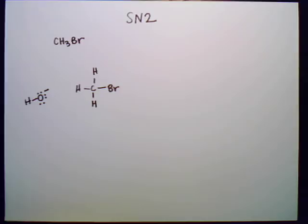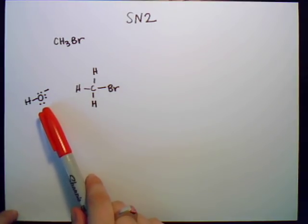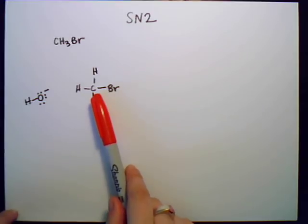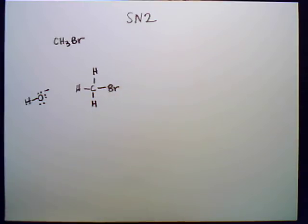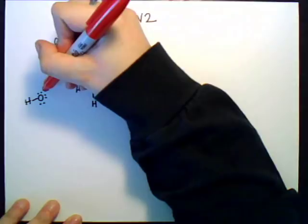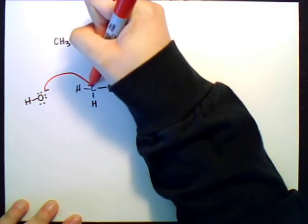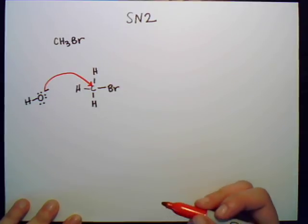What's going to happen in the SN2 reaction is you're going to have a nucleophile like this one, and it's going to attack the carbon in a molecule like this methyl bromide. Literally what's going to happen is that these electrons from here are going to attack that carbon right there.